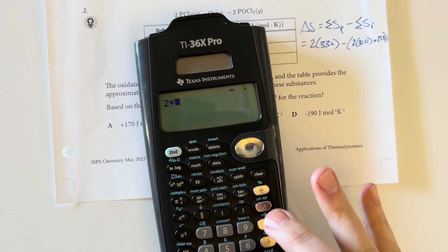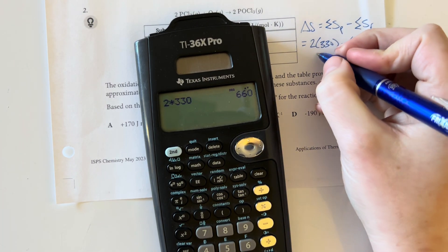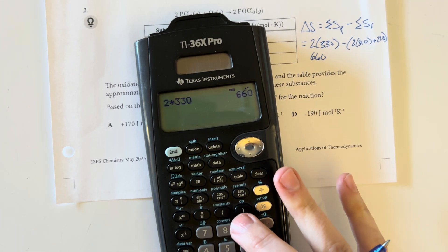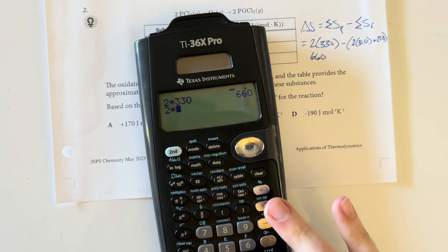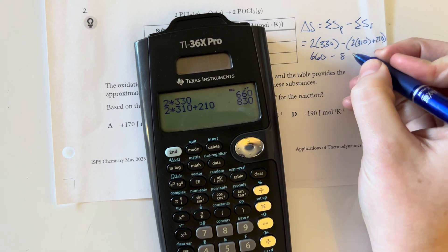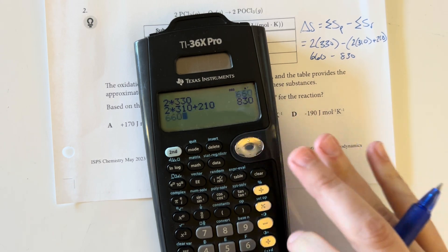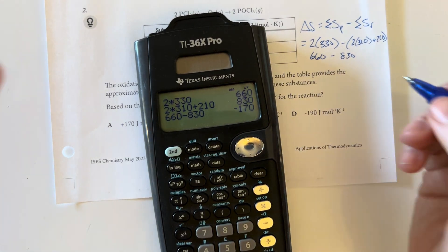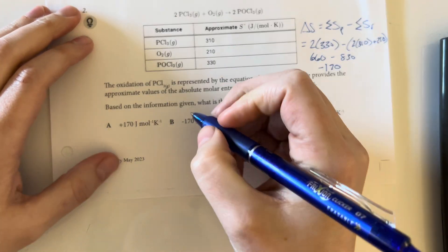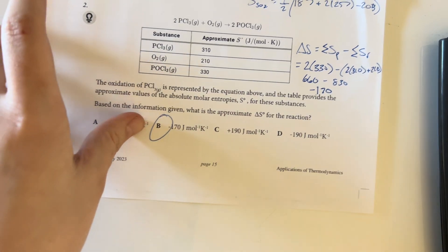So 2 times 330 is 660. Then 2 times 310 plus 210 gives me 830. And 660 minus 830 gives me negative 170, which matches answer choice B. That is going to be my final answer.